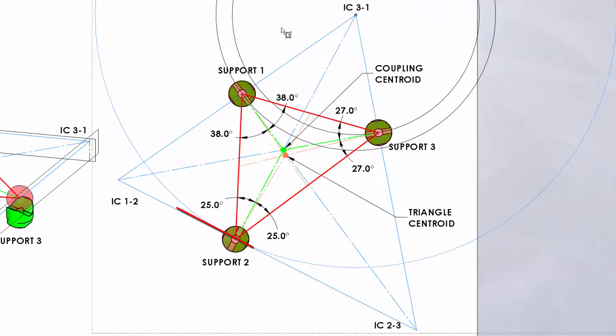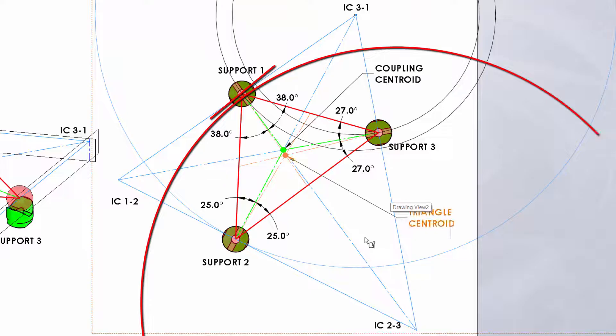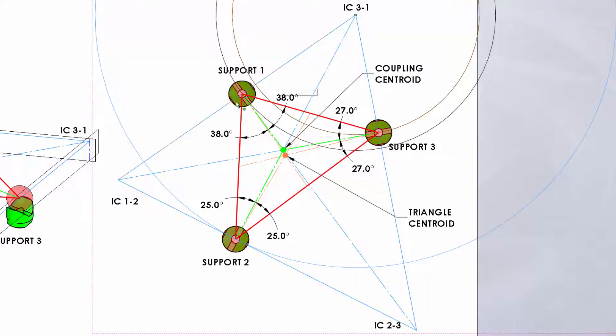So support two resists rotation about IC3-1, support three resists rotation about IC1-2, and support one resists rotation about IC2-3. So the combination of the grooves in this arrangement satisfying the Maxwell criterion offers resistance to motion about all three instantaneous centers.